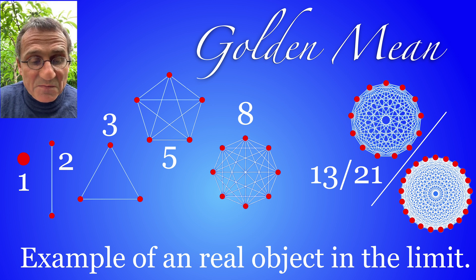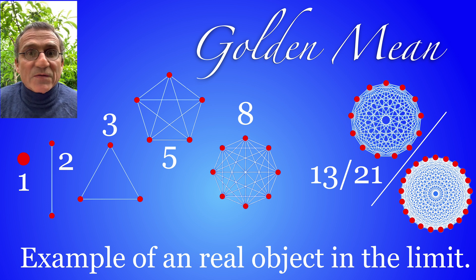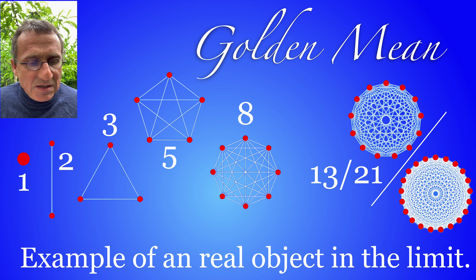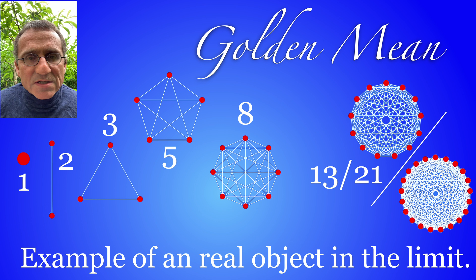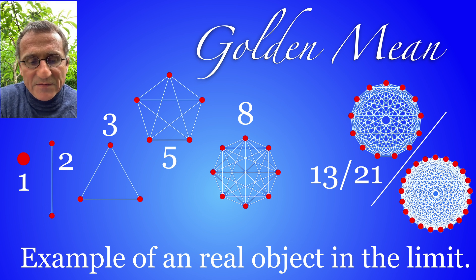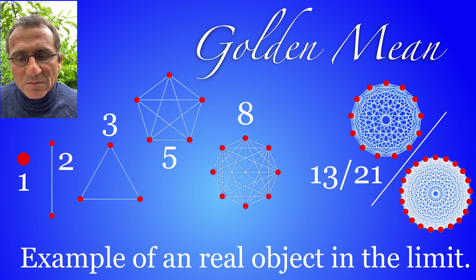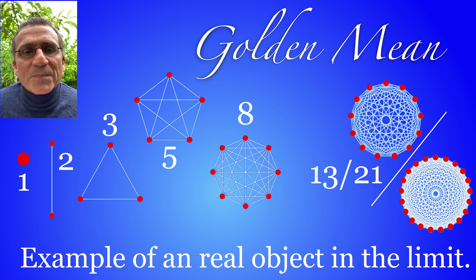But we could start with other graphs, for example instead of two we could start with a cyclic graph or with a wheel graph or any other graph. We could get another Fibonacci sequence and if we start with a sequence where the clique numbers are as such, then we get some object in the limit which has this limiting as a limiting clique number, the golden mean.